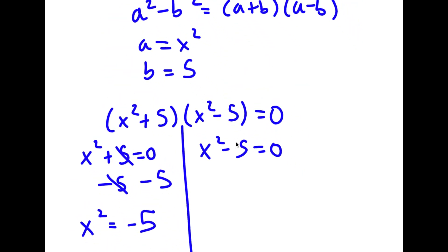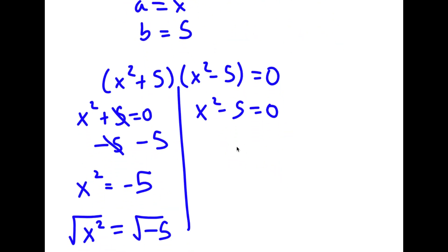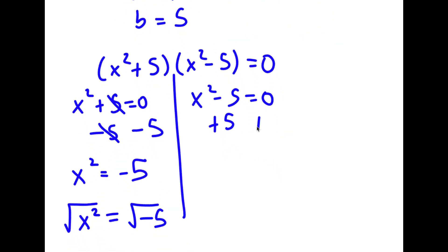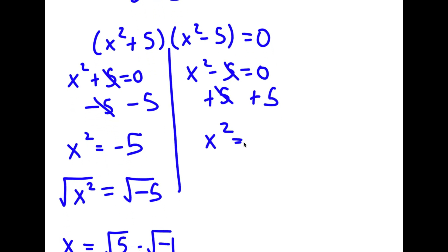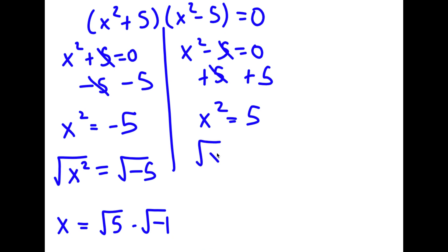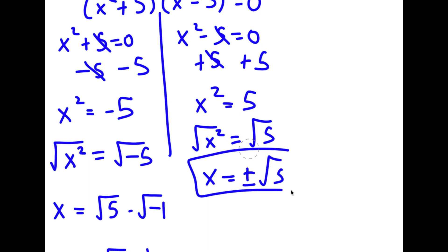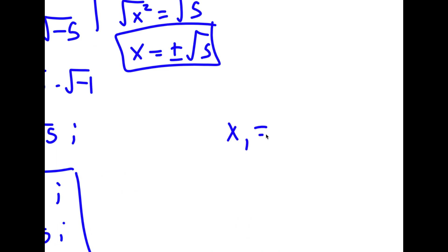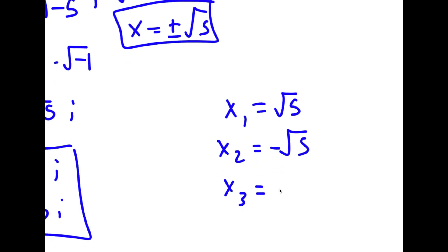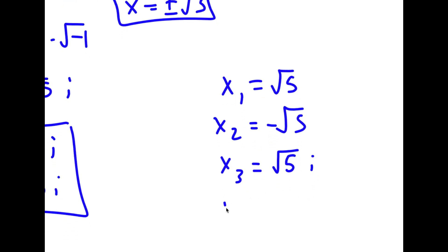For the other equation, x squared minus 5 equals 0, I add 5 on both sides, so these cancel and I have x squared equals positive 5. Taking the square root on both sides, the square root of x squared is x, and I have x equals plus or minus square root of 5. So my four solutions are: x equals square root of 5, x equals negative square root of 5, x equals square root of 5 times i, and x equals negative square root of 5 times i.